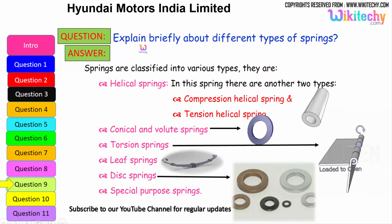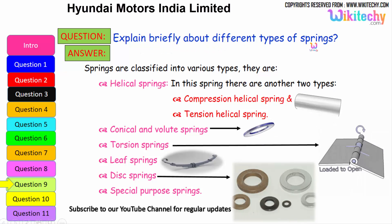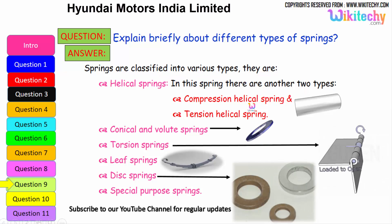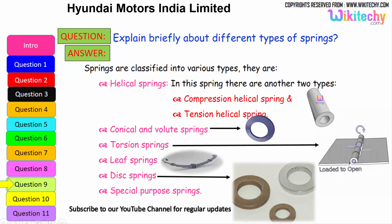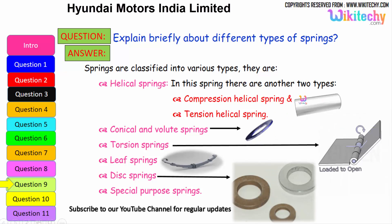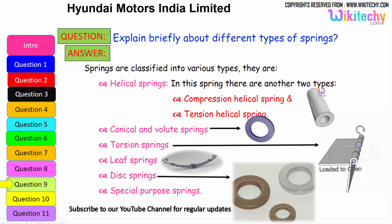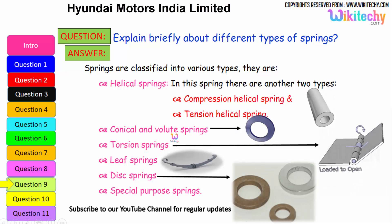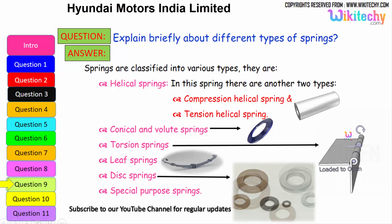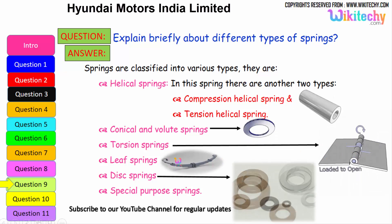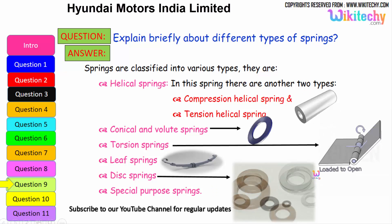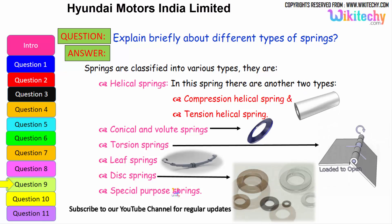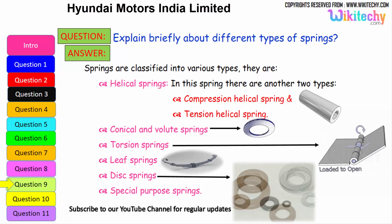Now let us briefly look at the different types of springs. Springs are classified into various types: first are helical springs, which have two subtypes — compression helical springs and tension helical springs. Next are conical volume springs, then torsion springs, leaf springs, disc springs, and finally special purpose springs. These are the different types of springs available.